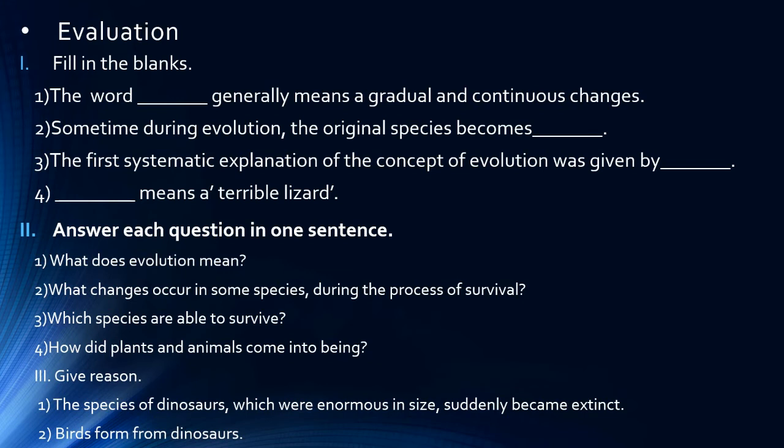Then, give reason. The species of dinosaurs which were enormous in size suddenly became extinct. So what is the reason? The reason is the species of dinosaurs which were enormous in size suddenly became extinct due to some certain natural disaster or environmental changes. So children, this also we have learned in our slide in video where we can see how these dinosaurs changed and transformed into fossils.